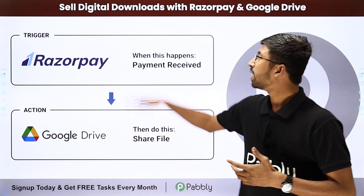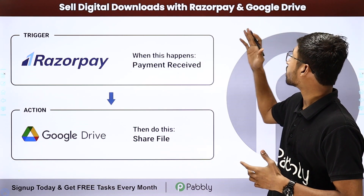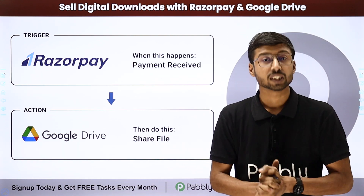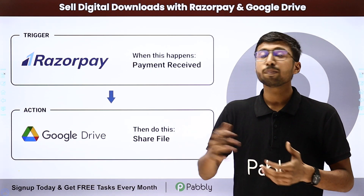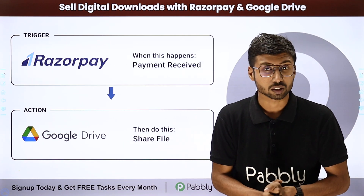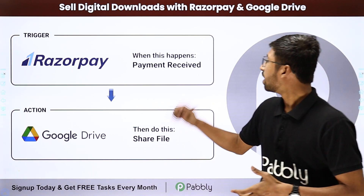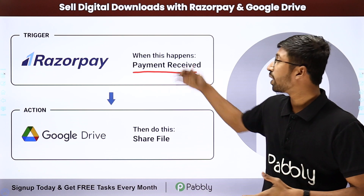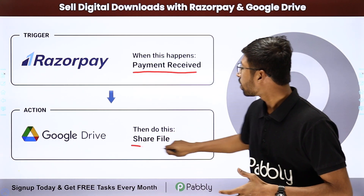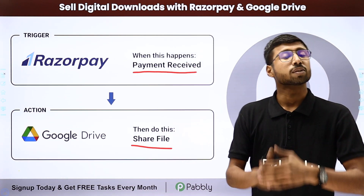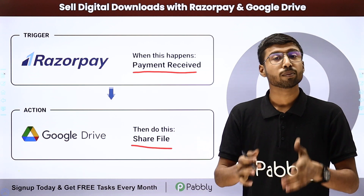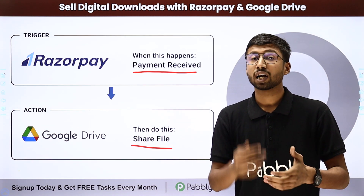The first automation use case is how to sell digital downloads with Razorpay and Google Drive. Suppose you have created a digital product and you are using an online payment gateway like Razorpay, Stripe, or PayPal to collect payments. Using this automation, whenever you receive a new payment, a file from your Google Drive account will automatically be shared with the customer who made the payment. You can completely eliminate the manual process of sharing files with your customers.